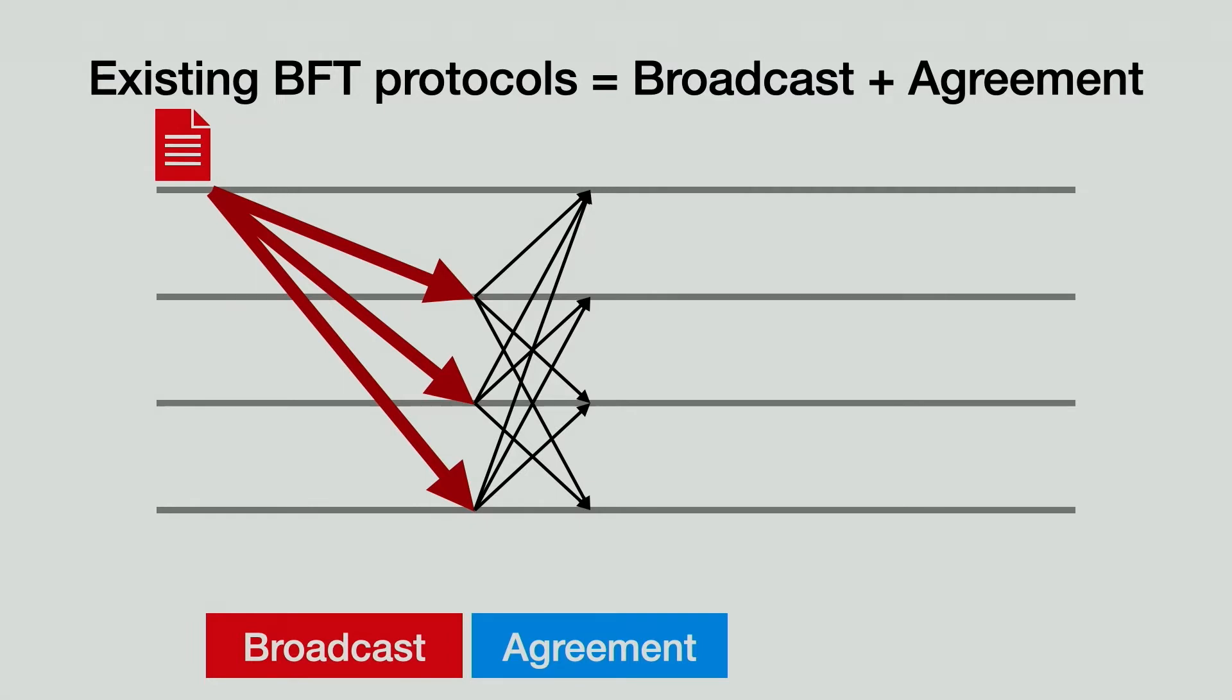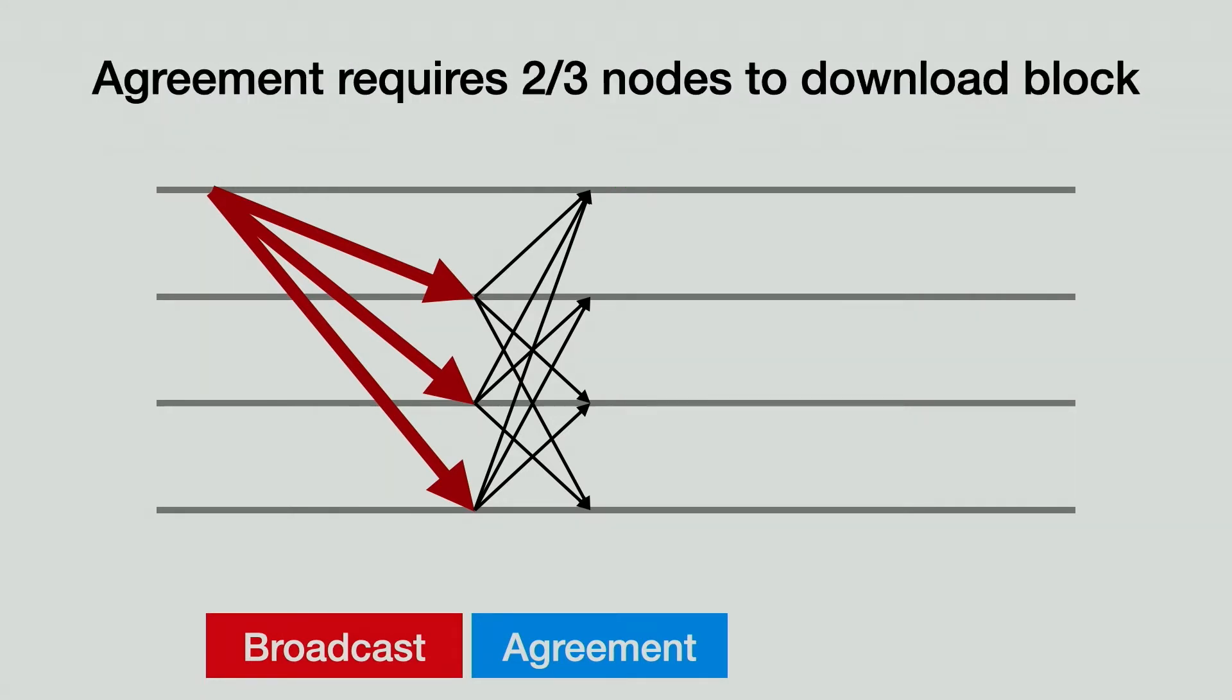In particular, the agreement phase requires votes from at least two-thirds of the nodes in order to finish. After reaching agreement, nodes unanimously append the block to their local copies of the log, and the protocol enters the next epoch. From a networking standpoint, the broadcast phase requires nodes to download a large amount of data and is bandwidth sensitive. The agreement phase, however, only involves a few rounds of short messages and is latency sensitive. The key takeaway is that agreement requires at least two-thirds of the nodes to vote, which in turn requires two-thirds of the nodes to finish downloading the block. This is the critical path for nodes to enter a new epoch and bounds the system throughput.